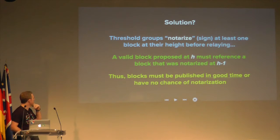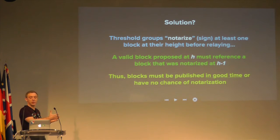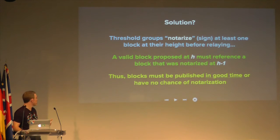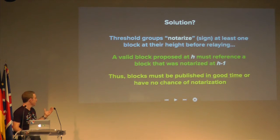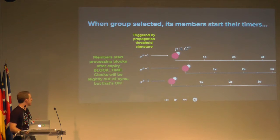The classic problems of selfish mining attacks and nothing-at-stake bedevil proof-of-stake protocols. The solution is to have the threshold groups additionally notarize blocks. A valid block at H can only build upon a block that's been notarized at H-1. In addition to creating the randomness and relaying between groups, they're also going to notarize at least one block, and you can only build on a notarized block. This has the amazing property that blocks must be published in good time or they'll have no chance of notarization — you can't withhold blocks anymore. If an adversary has a block and withholds it, the groups are going to move on, and you've missed your chance of notarization. We basically solve these problems.